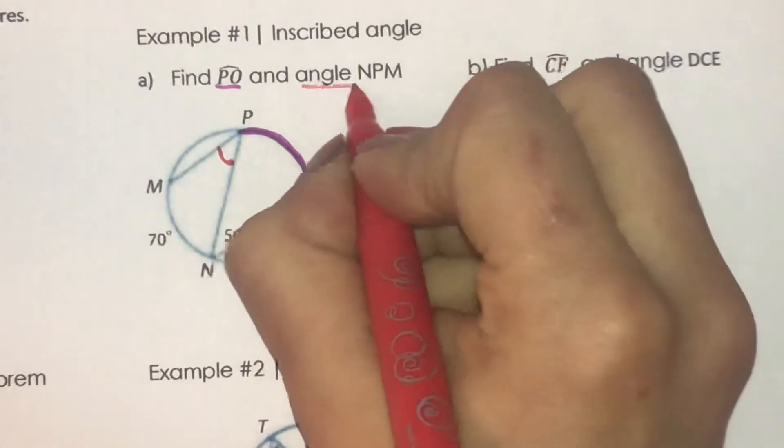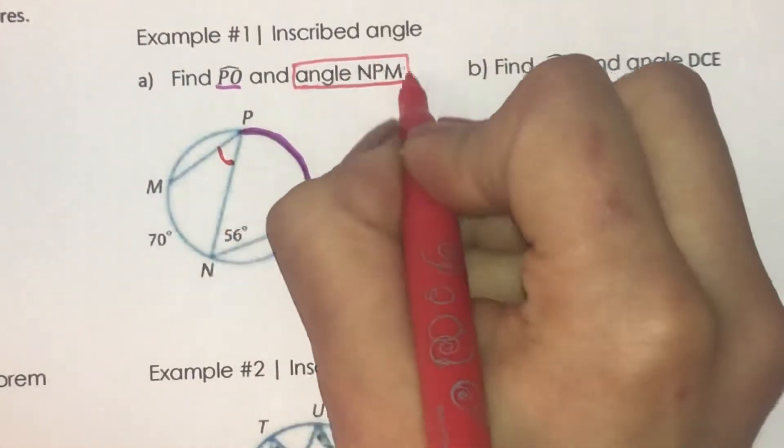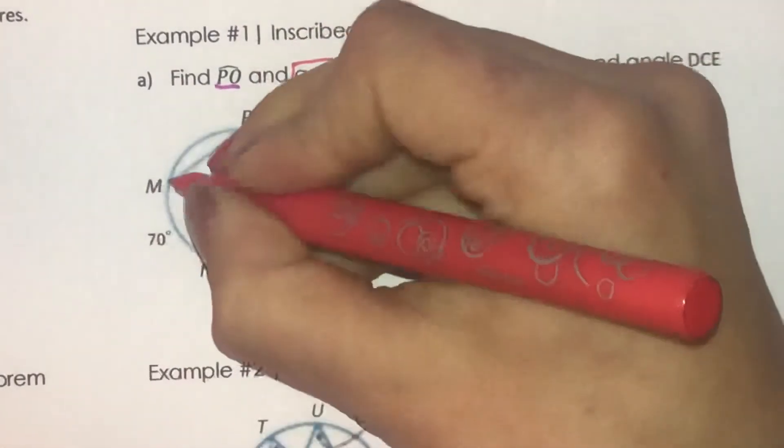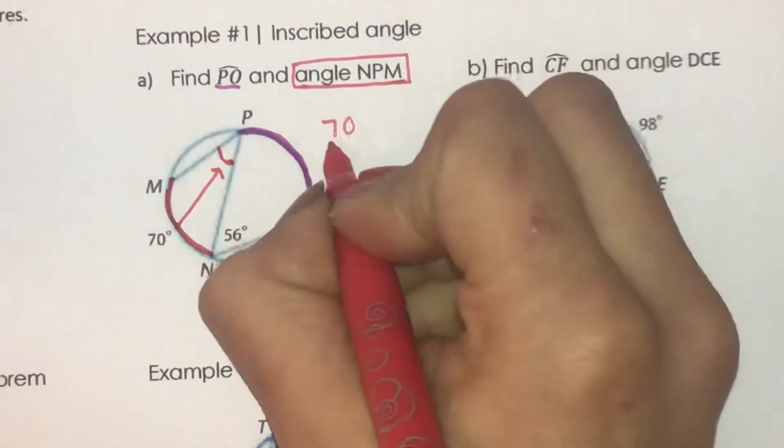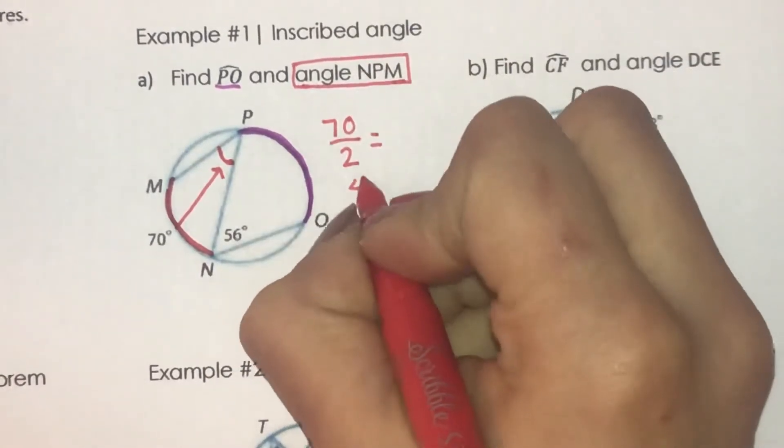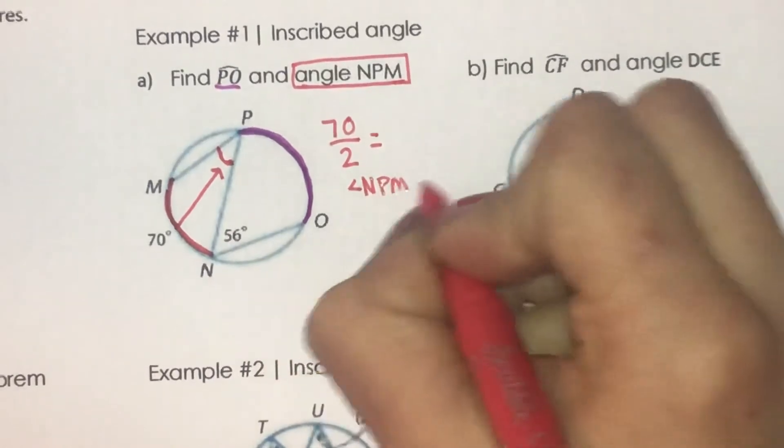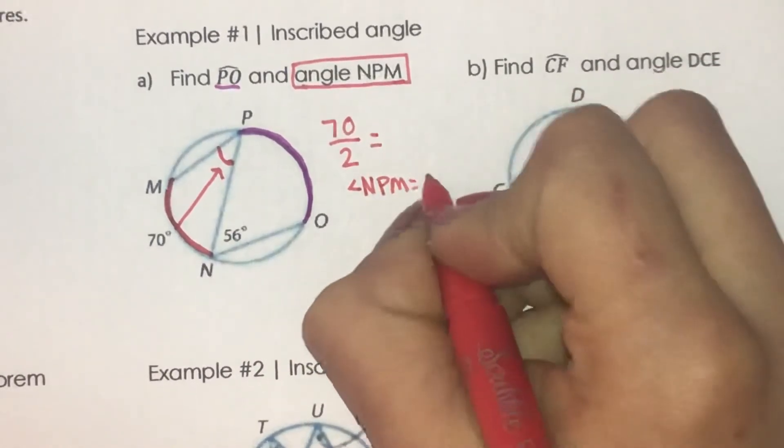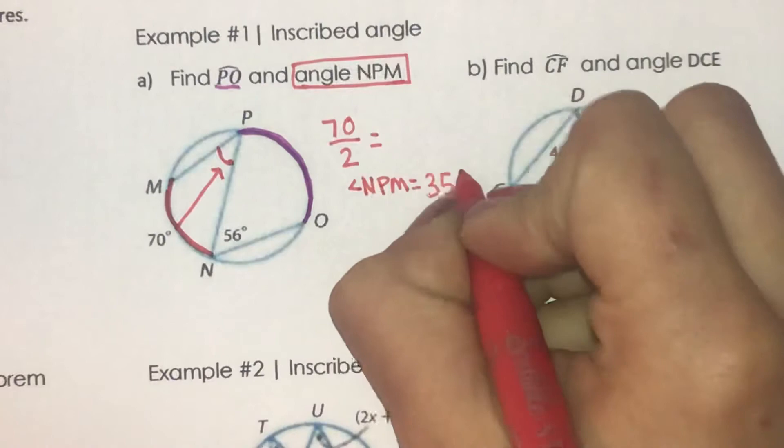I'm going to start with angle NPM. Okay, so what I'm going to do is take its arc measure to get this angle and do 70 divided by 2. That will give me angle NPM is 35 degrees.